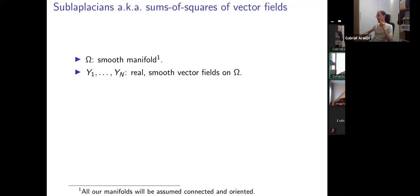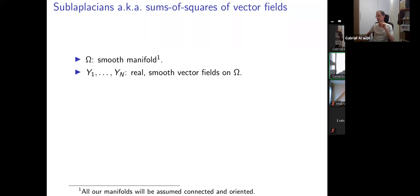I will talk about hypoellipticity of sums of squares, which is a classical subject in linear PDE. Here, omega will always be a smooth manifold — for global purposes I will assume manifolds are connected and oriented. I will pick a bunch of real smooth vector fields on my manifold and assemble the sum of their squares.